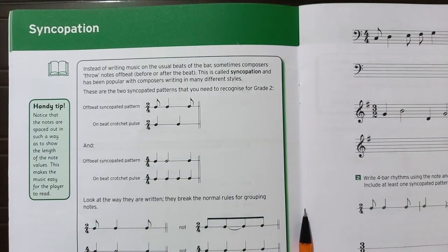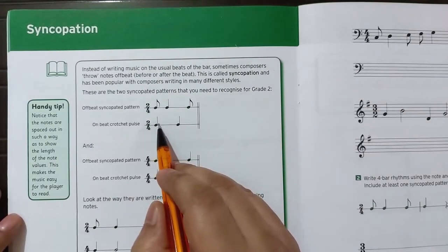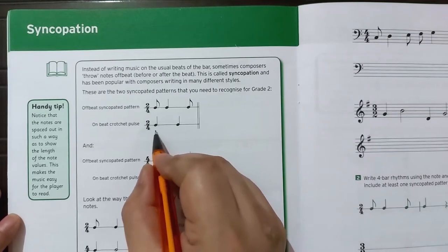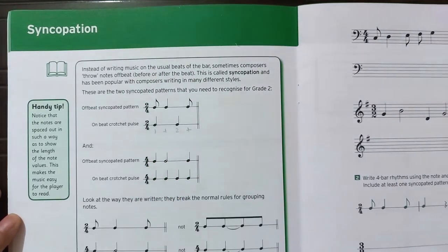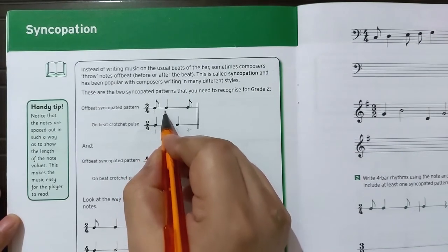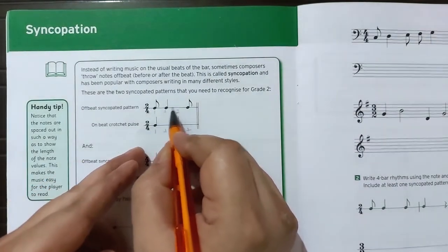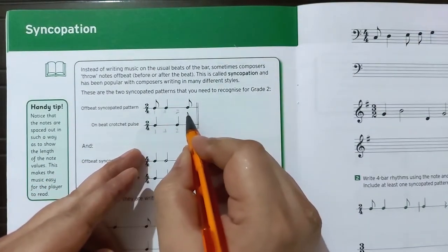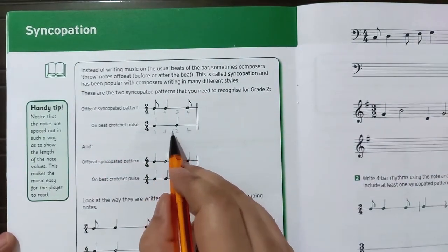They have broken the beat here. This should have been: one-and, two-and. But what they did was: one-and, then they missed the two — they covered beat two with the 'and' from before. So instead of one-and, two-and, what they did was: one-and, [tied into] and.